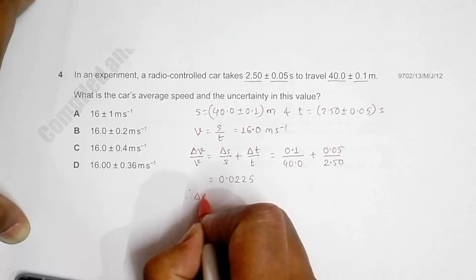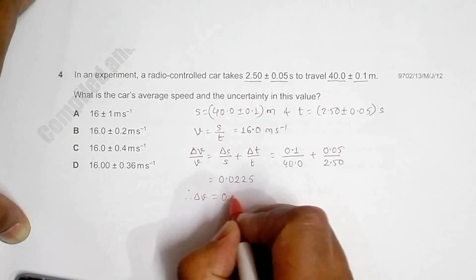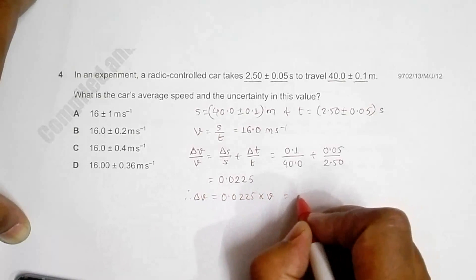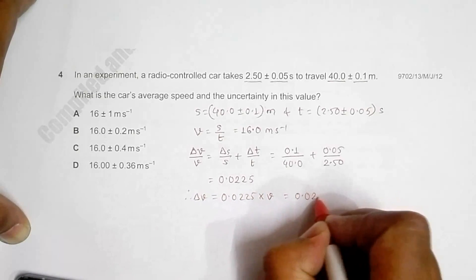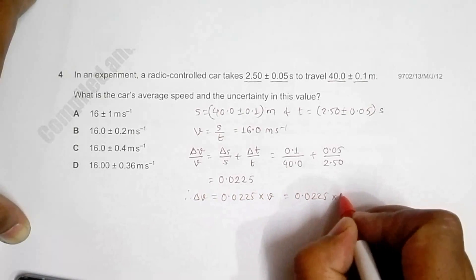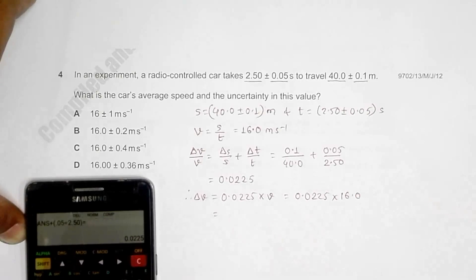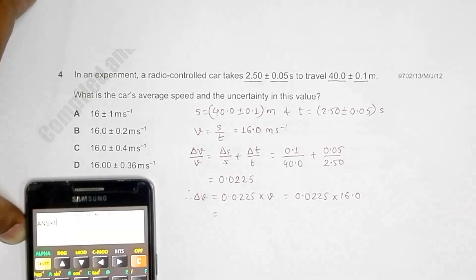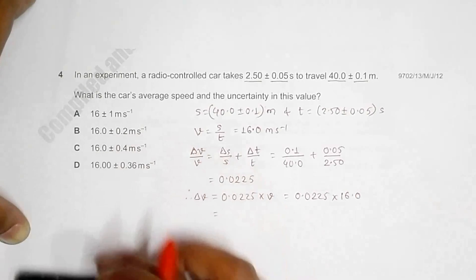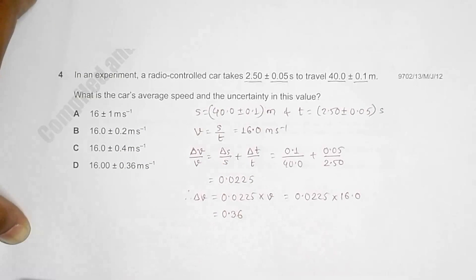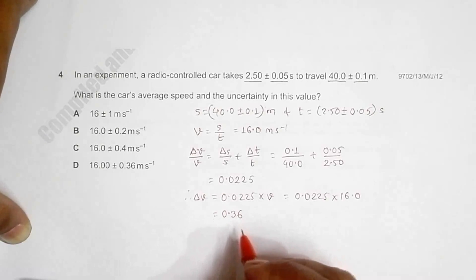Therefore, ΔV = 0.0225 × V = 0.0225 × 16.0, which will be equal to 0.36. So here if I express the error in 2 significant figures, this is the error in 2 SF.